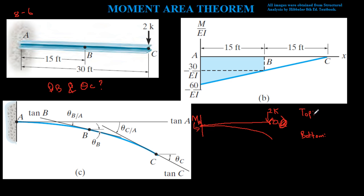The moment is 60 because 2 times 30 gives us 60. But why is it negative instead of positive? This is where the sign convention comes in. If we analyze the elastic curve from the top: compression at the top means positive moment, and tension at the top means negative moment.